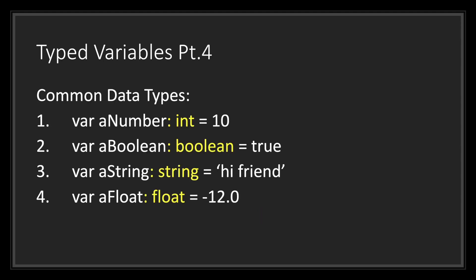Next, we'll take a look at some of the common data types you'll find yourself using. In the first example, we have a variable a number with the integer data type. In the second example, we have a variable a boolean and we've assigned it the data type boolean to it with the assigned value true.